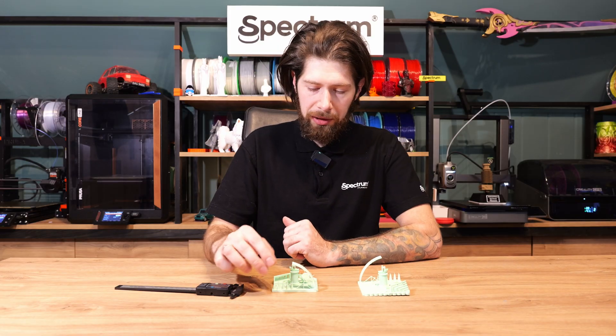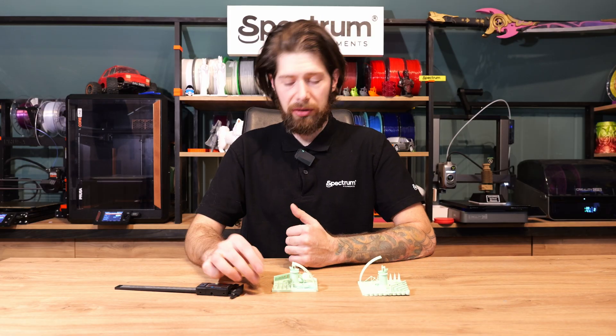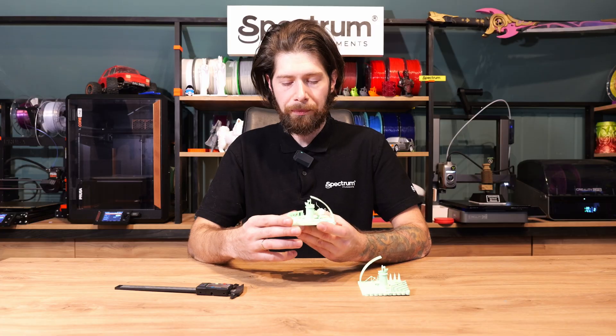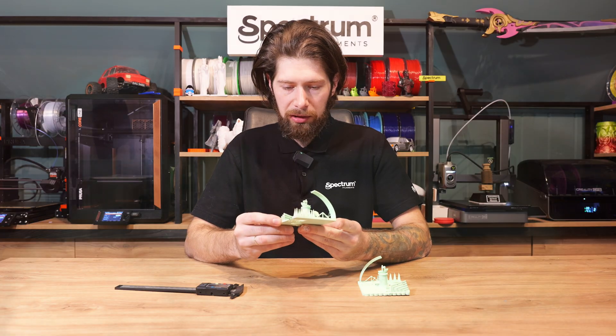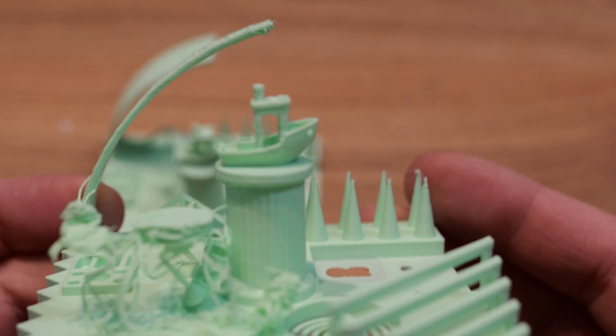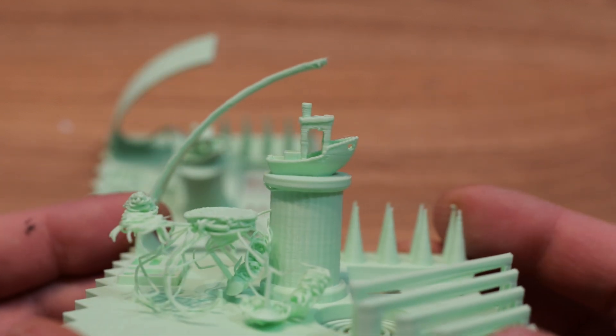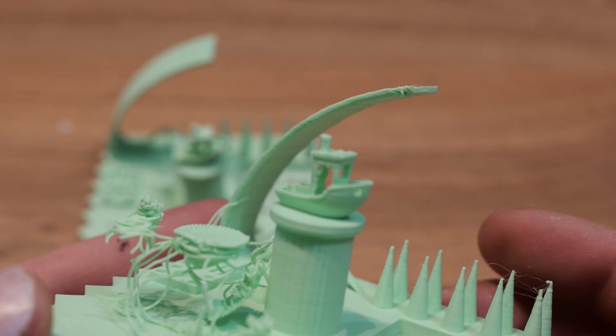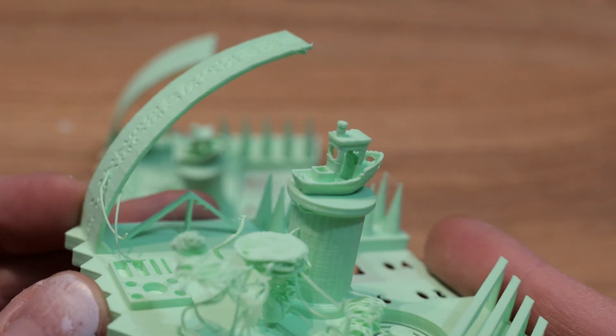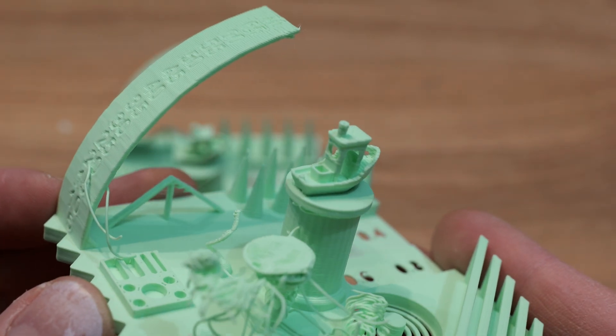And the competitor, I'm not going to compare printers here but this is the Prusa Core 1. And we had a little bit different speeds here because we also used this default profile for 0.2 and this is structural profile for Core 1 0.2 mm.